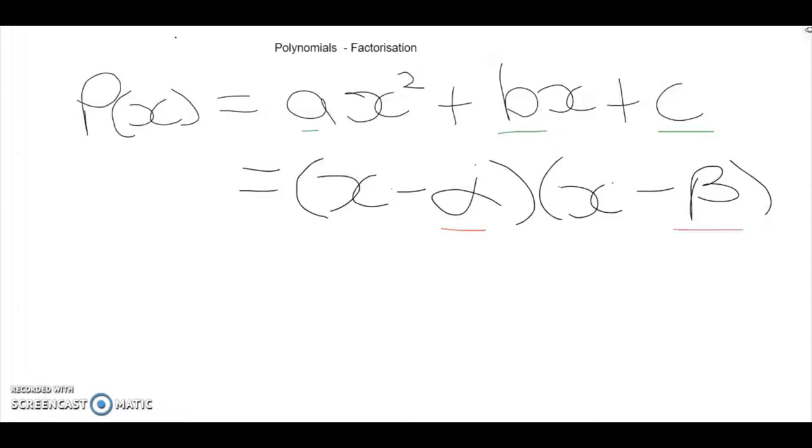Now in this form, we are saying that α and β are the roots of the polynomial, because when we substitute in either of those values,